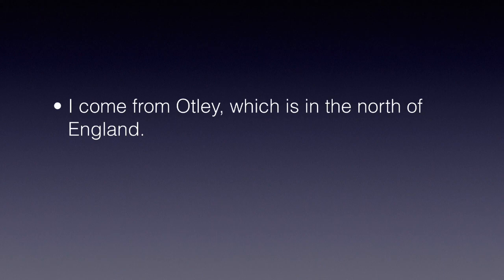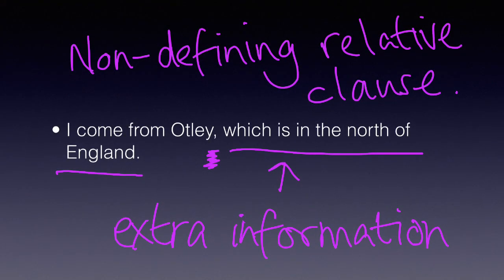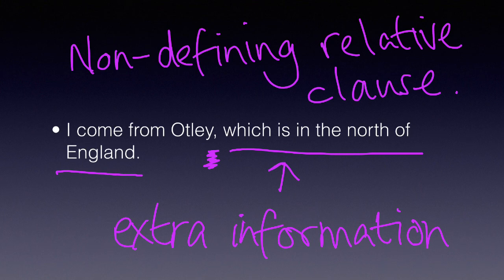But what kind? In this sentence, the relative clause 'which is in the north of England' is simply extra information. Sure, it's nice to know, but it doesn't change our understanding of what Otley means. It's just extra — it doesn't define the meaning of Otley. So this is called a non-defining relative clause.